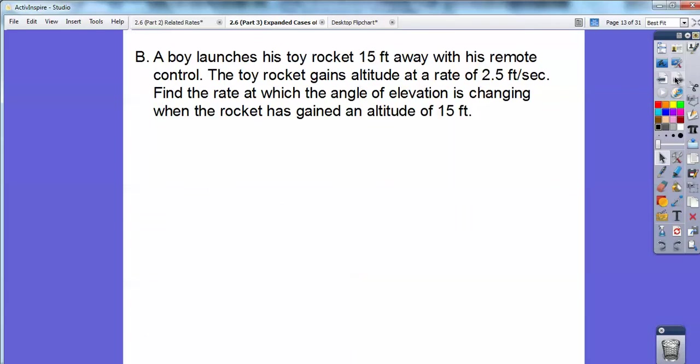A boy launches his toy rocket 15 feet away with his remote control. The toy rocket gains altitude at a rate of 2.5 feet per second. Find the rate at which the angle of elevation is changing when the rocket has gained an altitude of 15 feet. So there's my rocket going up. I found this on Google, a little rocket ship.